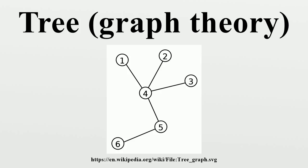Facts: Every tree is a bipartite graph and a median graph. Every tree with only countably many vertices is a planar graph. Every connected graph G admits a spanning tree, which is a tree that contains every vertex of G and whose edges are edges of G. Every connected graph with only countably many vertices admits a normal spanning tree.